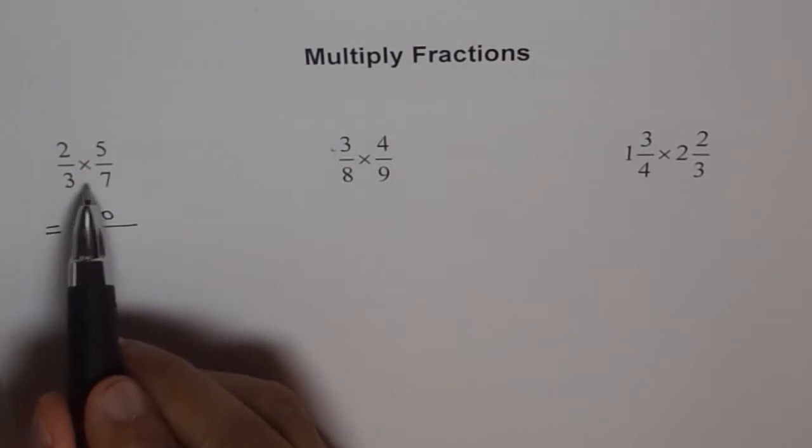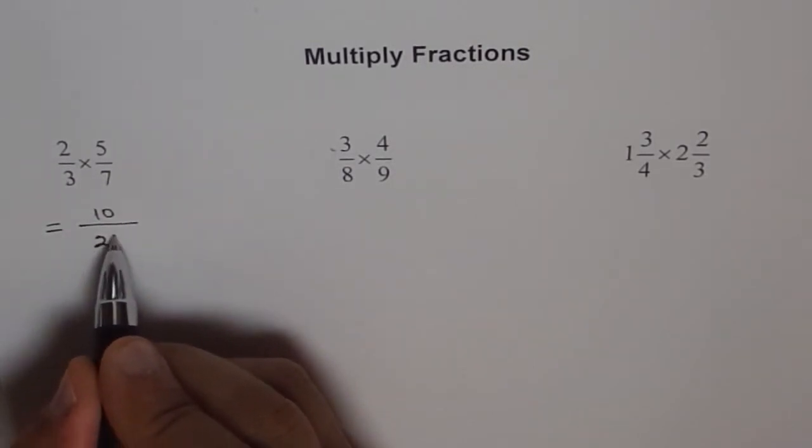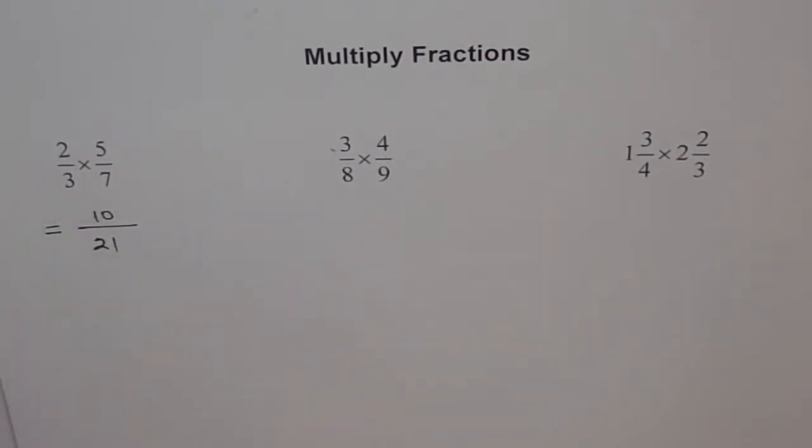And the denominator is 7 times 3, which is 21. So the product of denominator is 21, which comes in the denominator. And the product of numerator is 5 times 2, 10, which comes in the numerator. And that's our answer.